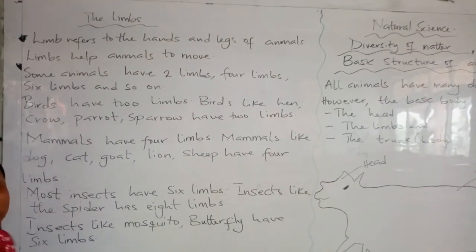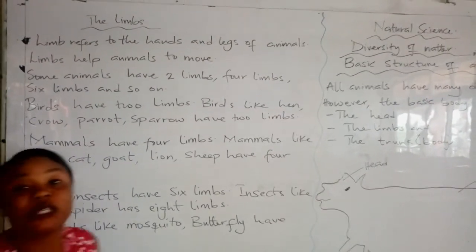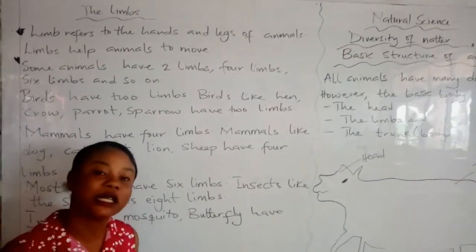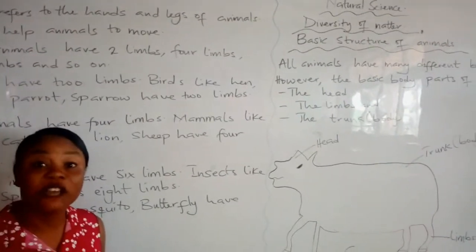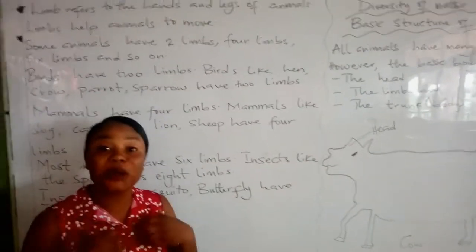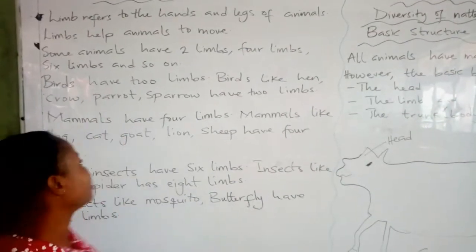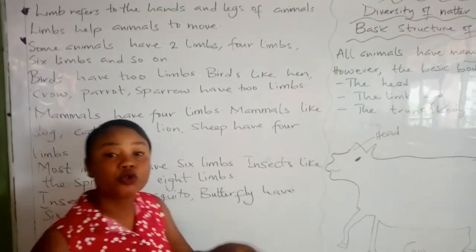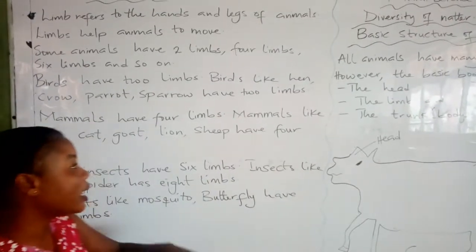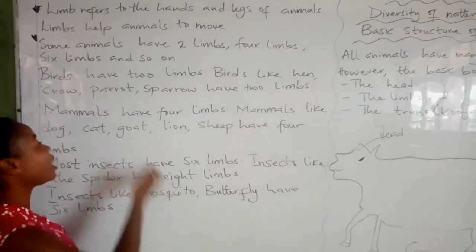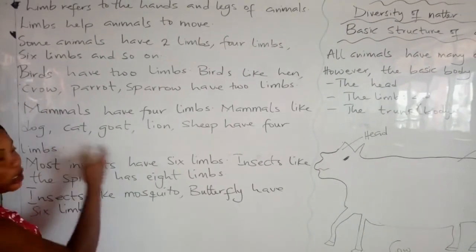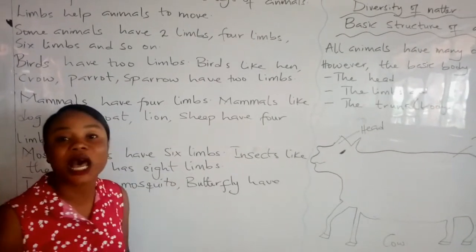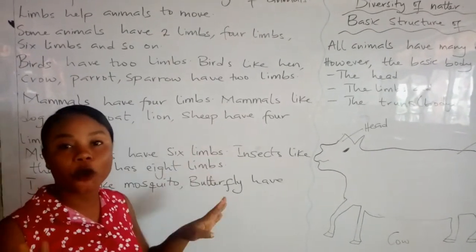Then mammals. Mammals are animals who give birth to their own kind. Examples are cat, dog, and lion. Even as human beings, we are mammals. Mammals have four limbs that they use to move from one place to another. Examples of mammals are dog, cat, goat, lion, and sheep. All these animals have four limbs.